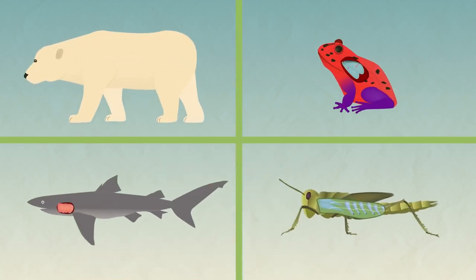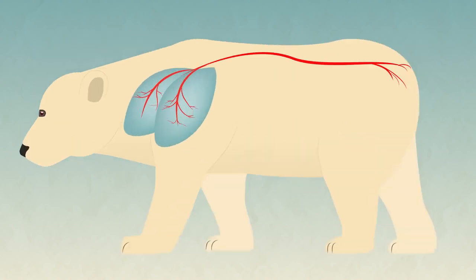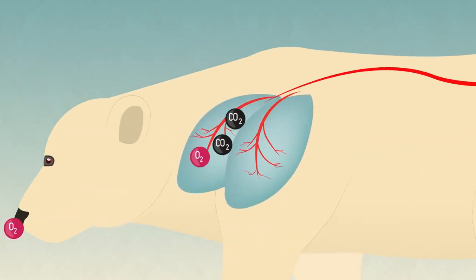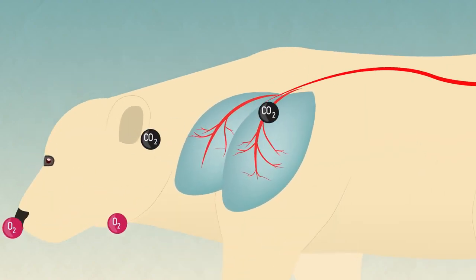These are all special in their own way but they also have a few things in common which make them good at exchanging gases. The most important thing is to create a large surface area. The bigger the surface area, the faster the diffusion of gases can occur.